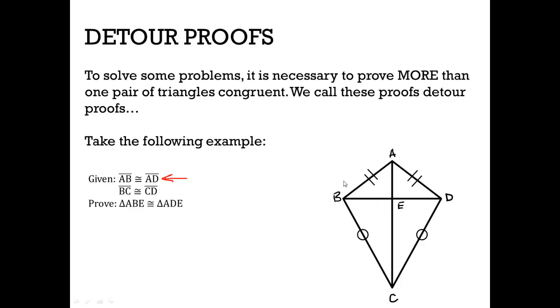If you look and say, how do I prove these triangles congruent, you just don't have enough information to do it. So we have to do what is called a detour proof, where we prove other triangles congruent first, and then use that to help prove the parts of the other triangles that we are trying to prove. Let's actually see how we would tackle this problem.